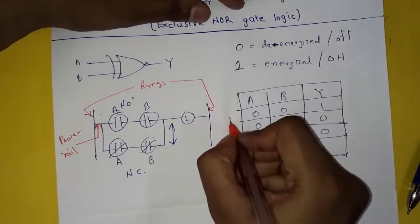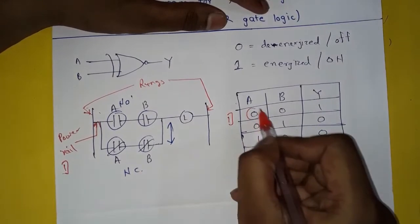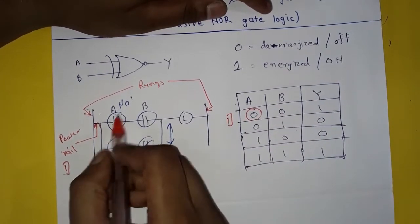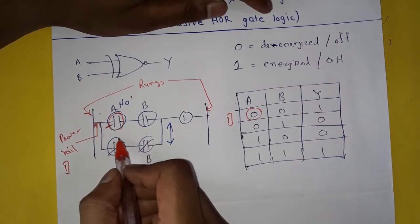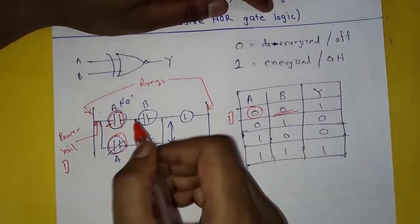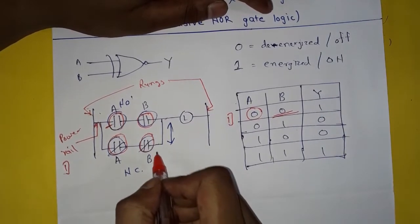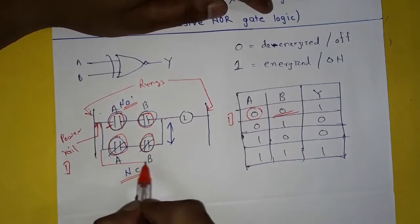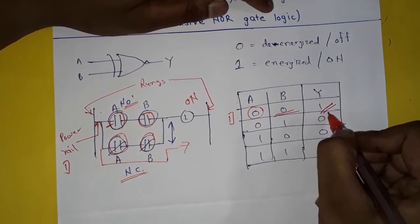This is our first condition. A is de-energized, so it is represented as 0. A remains as it is — in normally open condition here, and normally closed condition here. B is also 0, that is de-energized or off, so B remains as it is — normally open here and normally closed here. Since we have normally closed and normally open, the current will flow and the lamp will glow. So it is on, represented as 1.